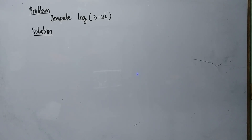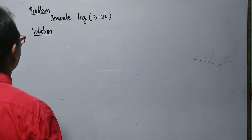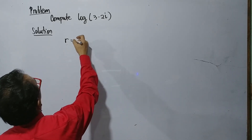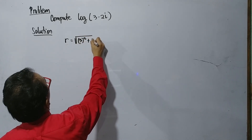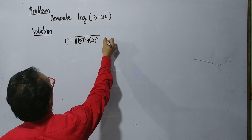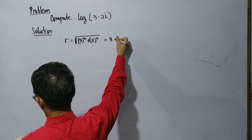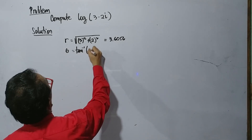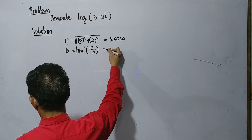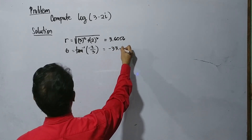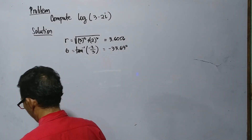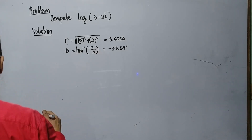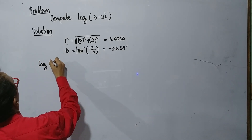For our problem, we have to compute the logarithm of 3 minus 2i. First, compute r and theta. Once you have the values of r and theta, just apply the formula.